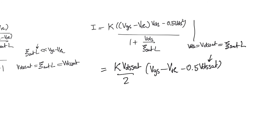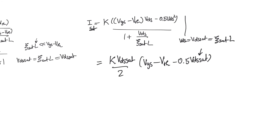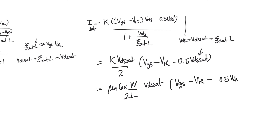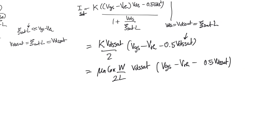It is important to realize that VDS_SAT here is a constant for any given transistor — not an applied voltage, but a constant in the same way threshold voltage is a constant. This leads to the key conclusion that for very short channel transistors, the saturation current becomes linear in VGS minus VTH. That is a significant result. Expanding K as μ_N·C_ox·(W/L), and noting that VDS_SAT divided by L equals ESAT, the constant outside becomes 0.5·μ_N·C_ox·W·ESAT.